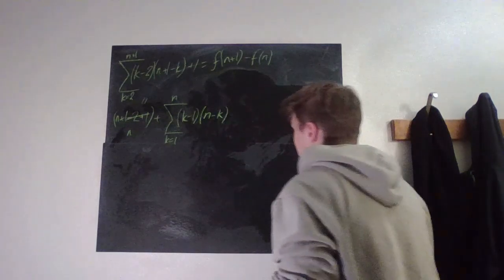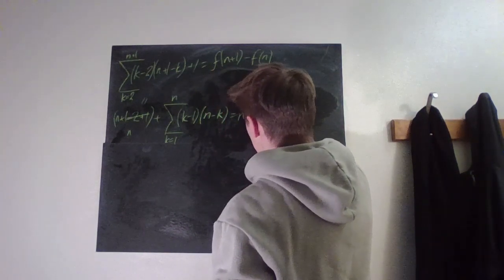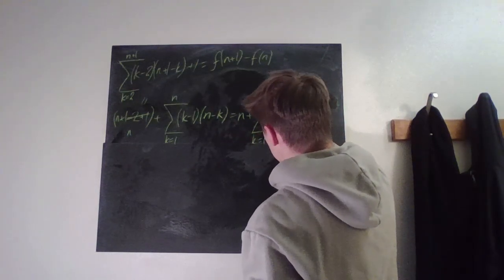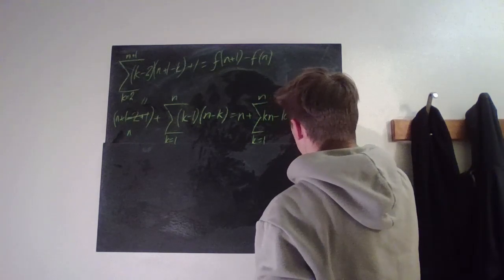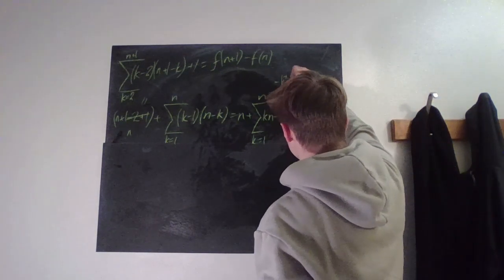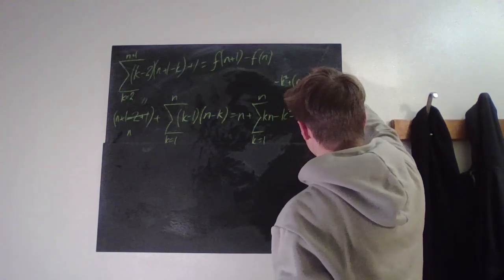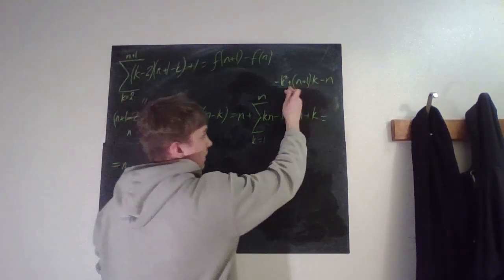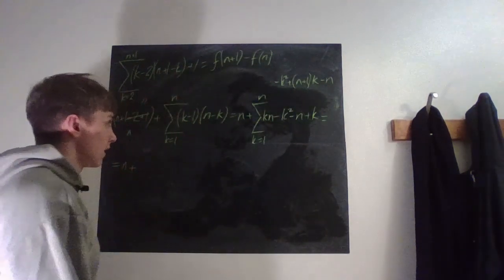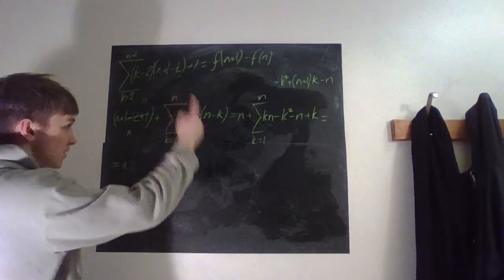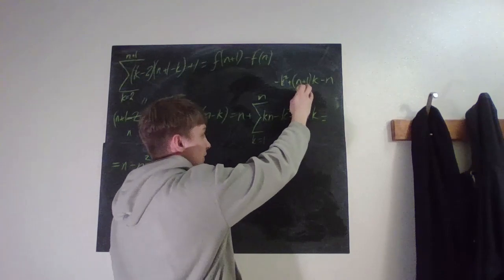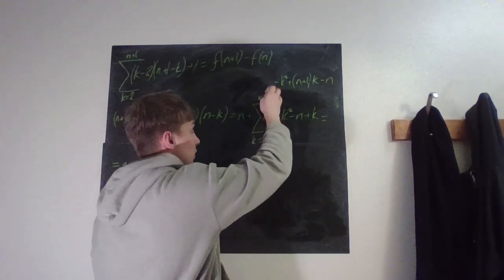So we have n plus the sum from k=1 to n of (k minus 1)(n minus k). Expanding the parentheses gives: kn minus k² minus n plus k, which we rewrite as minus k² plus (n+1)k minus n. Splitting the sum, the minus n term gives minus n squared, and the k term gives (n+1) times n(n+1)/2.